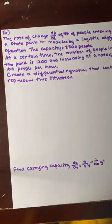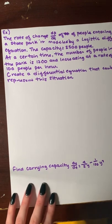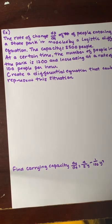So, on to an example. The example says the rate of change, DP over DT, of the number of people entering a state park is modeled by a logistic differential equation. The capacity is 2,500 people. At a certain time, the number of people in the park is 1,200 people, and it's increasing at a rate of 100 people per hour. Create a differential equation that could represent this situation.